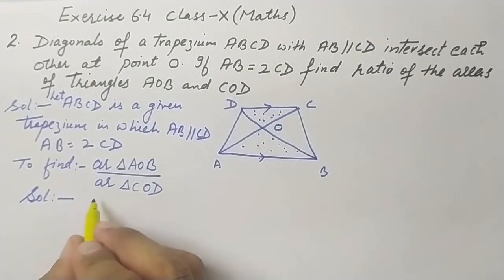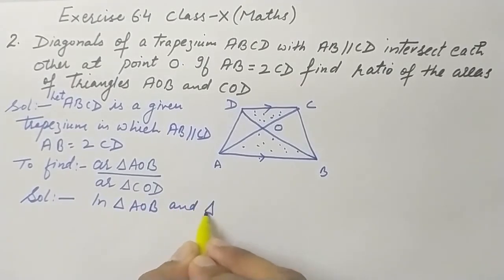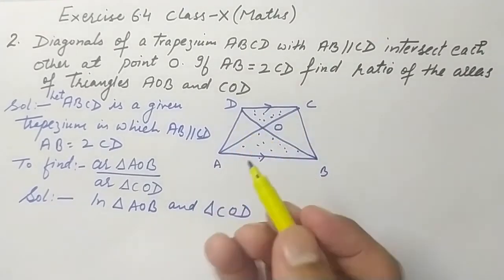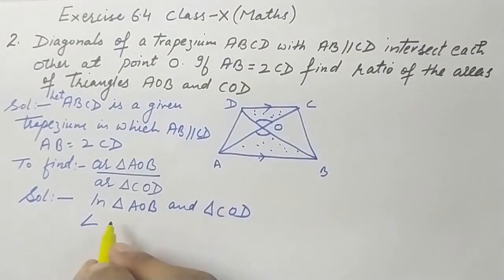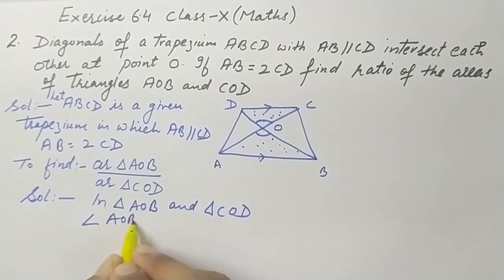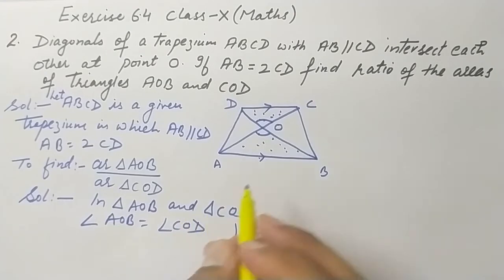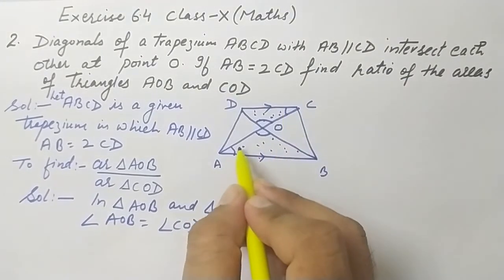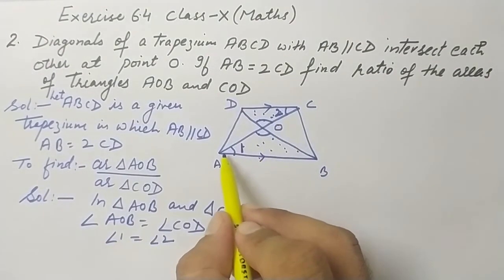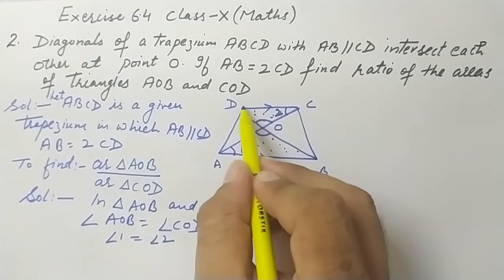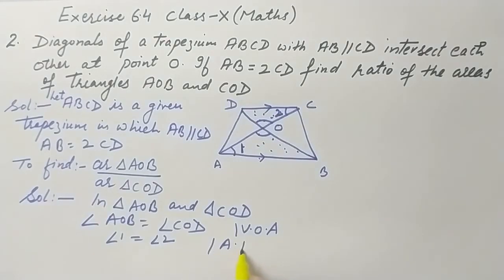In triangle AOB and triangle COD, we prove similarity as follows. First, angle AOB is equal to angle COD because these are vertically opposite angles. Second, angle 1 is equal to angle 2 because these are alternate interior angles — since AB is parallel to CD with the diagonal as a transversal.